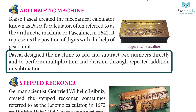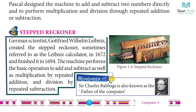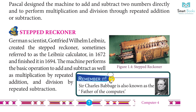Step Reckoner: German scientist Gottfried Wilhelm Leibniz created the Step Reckoner — sometimes referred to as the Leibniz Calculator — in 1672 and finished it in 1694. The machine performs the basic operations of addition and subtraction, as well as multiplication by repeated addition and division by repeated subtraction.